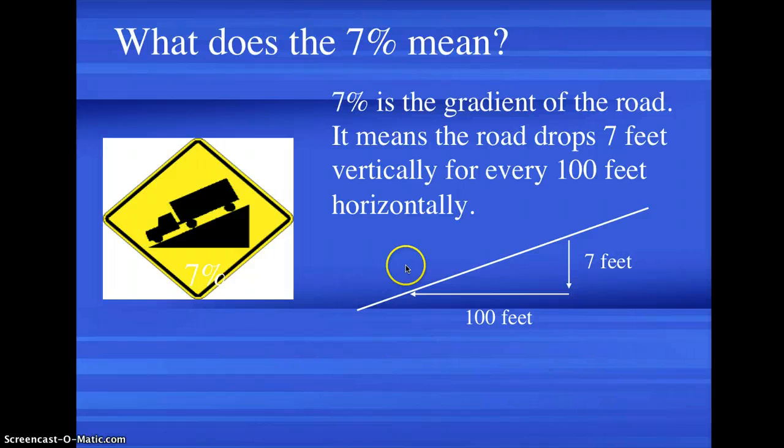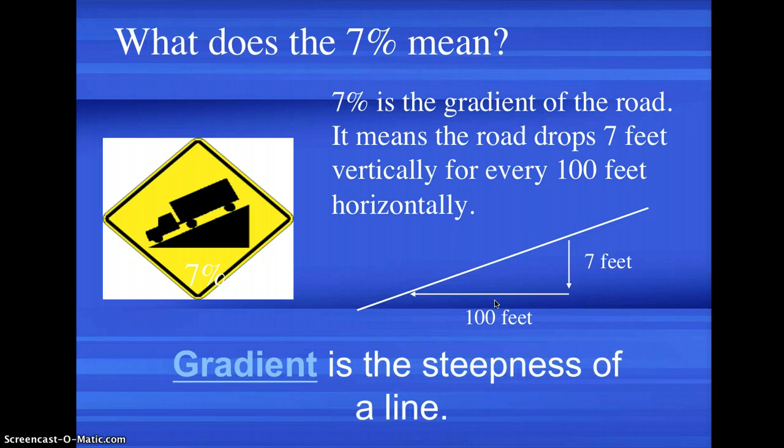It means that the road drops 7 feet vertically for every 100 feet horizontally. So if you look at it in another way, you will see that here's 7 feet and here's 100 feet. In here, gradient is the steepness of a line.